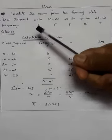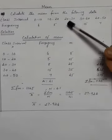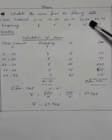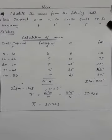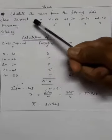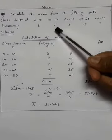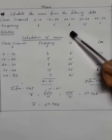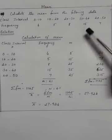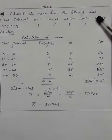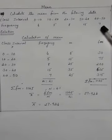Class interval: 0-10, 10-20, 20-30, 30-40, 40-50. Frequency: 0-10 frequency 6, 10-20 marks frequency 5, 20-30 marks frequency 8, 30-40 marks frequency 15, 40-50 marks frequency 7.